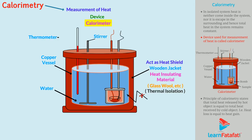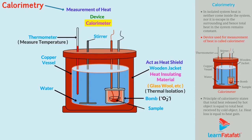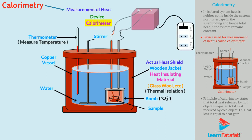A thermometer is inserted into the vessel through a small opening. It helps to measure the temperature inside the vessel. A sample to be burnt is kept in a closed chamber called a bomb. This chamber is supplied with compressed oxygen to facilitate the burning process. When current is passed through ignition wires, the sample catches fire and burns.